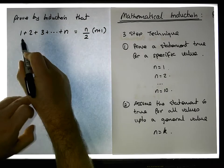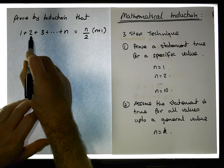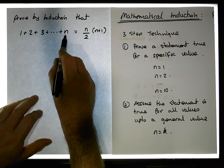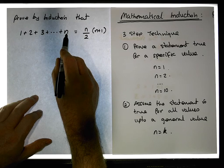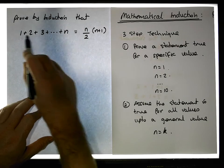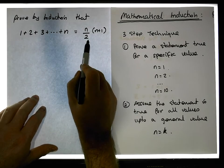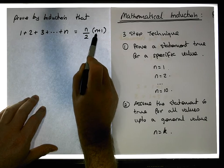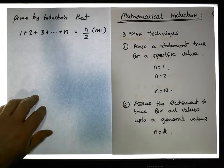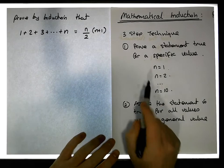That is, the sum of a finite sequence of numbers starting at one all the way through to a specific number is equal to the final number in the series divided by two, times the final number in the series plus one. We need to prove that this is actually true, so let's follow our process.